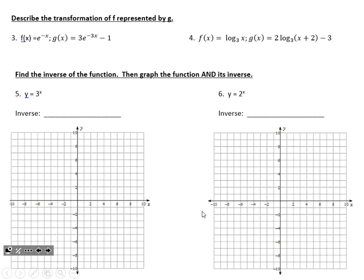Next we talk about transformations. For problem number 3, I'm starting with e to the negative x — the negative just means it's following the parent function. There's a 3 out front indicating we're 3 times as tall — a vertical stretch by a factor of 3. There's also a 3 multiplied onto x, indicating 3 times as fast — or a horizontal shrink by a factor of one-third, which is also acceptable. The only other change is the minus 1, which is a vertical shift down 1 unit.